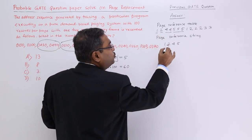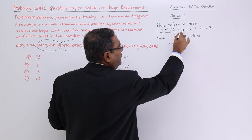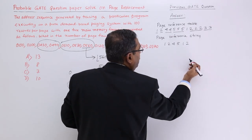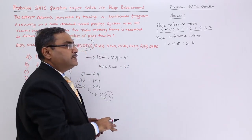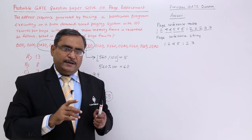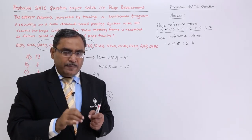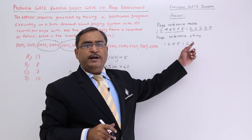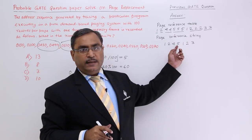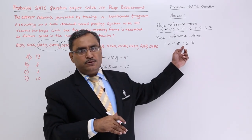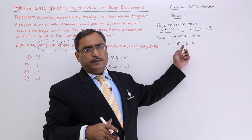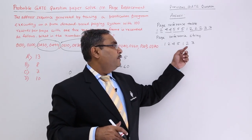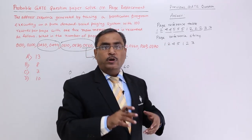Here we are having only one frame. For each and every time, there will be one page fault. When 5 is there existing in the memory, then 1 has been called. Page number 5 will be replaced to make room for page number 1. Similarly, page number 1 will get replaced to make room for page number 2. In this way, each and every demand of this particular page will cause one page fault.